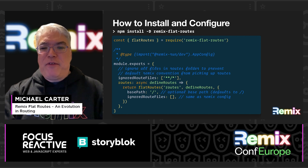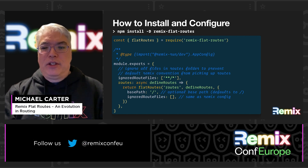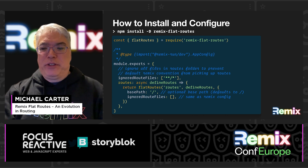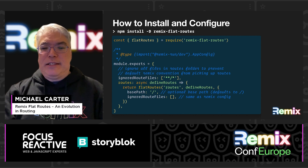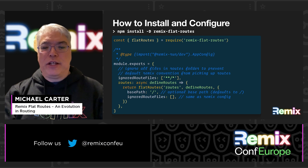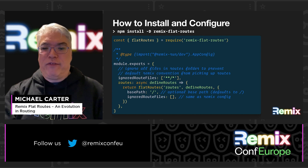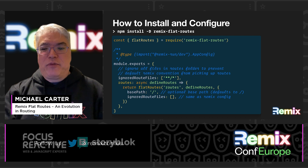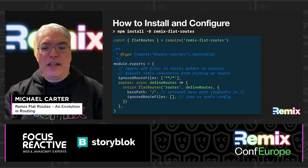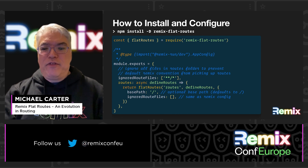Remix FlatRoutes is currently implemented as a separate package. To add it to your app, simply run npm install -D remix-flat-routes. Since routes are determined at build time, this is a dev dependency and is not needed at runtime. One of the things about Remix is that although it's opinionated, it does have escape hatches for customization. You'll need to tell Remix to ignore all files in the routes folder, then call the FlatRoutes function to scan the folder using the new convention. In the future, you'll be able to specify which convention to use directly through the Remix config file.